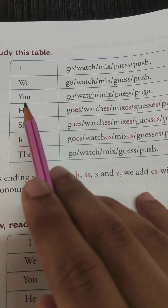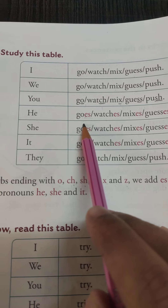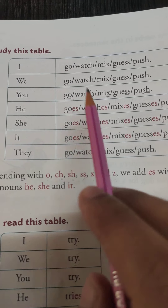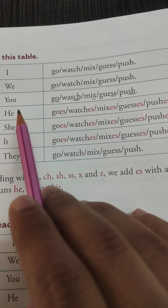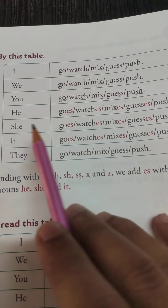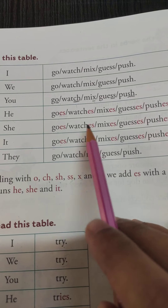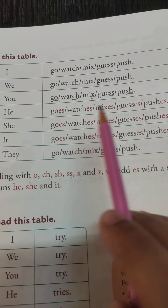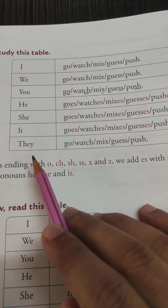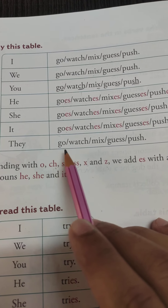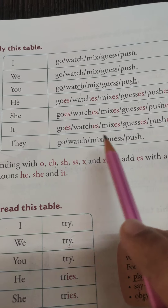But when we use a verb with he, she, or it: he goes, he watches, he mixes, he guesses, he pushes; she goes, she watches, she mixes, she guesses. Same with it. And with they: they go, they watch, they mix, they guess, they push.